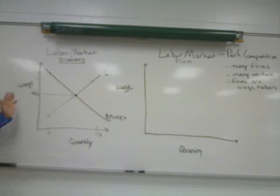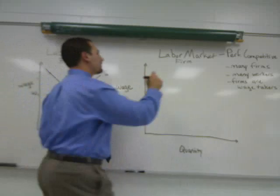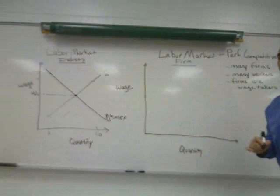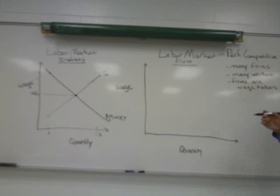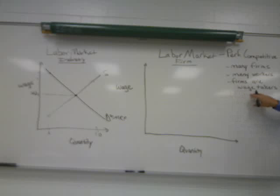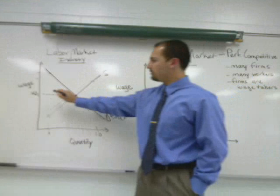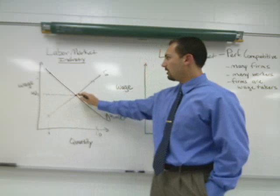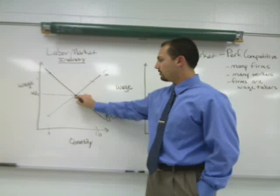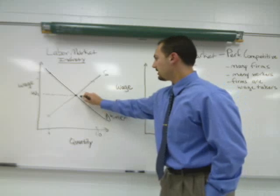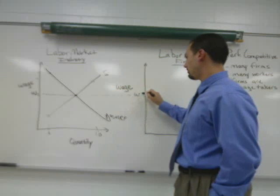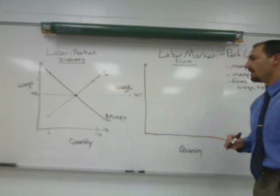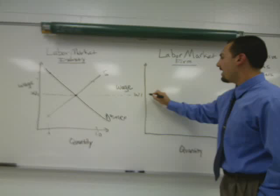Now we're going to move from the industry to the firm. We characterized the perfectly competitive resource market as one in which firms and employees are wage takers. Because of that, we are going to take this wage — W1, the industry-produced equilibrium wage — and carry it over to the firm's graph, where we label it again as W1.